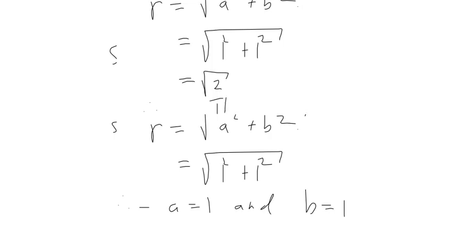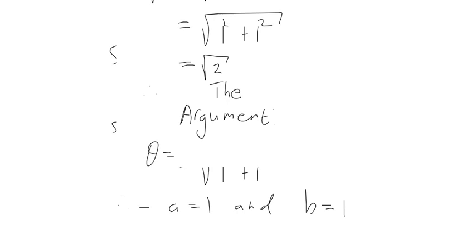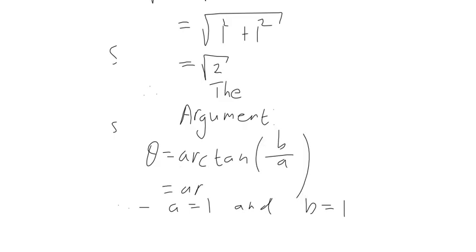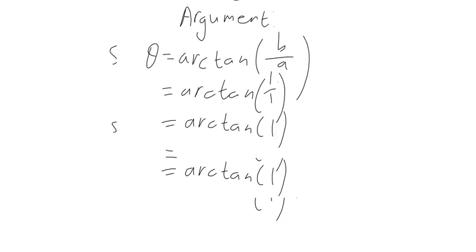Therefore the argument θ becomes: θ equals arctan(B over A), which is arctan(1 over 1), equal to arctan(1), which gives us π over 4. Because arctan is the inverse tangent — the angle whose tangent equals 1 is π/4, since tan(π/4) = 1, therefore arctan(1) = π/4.